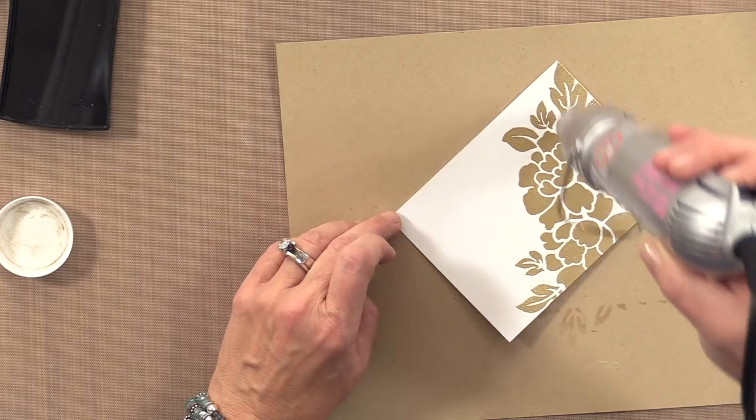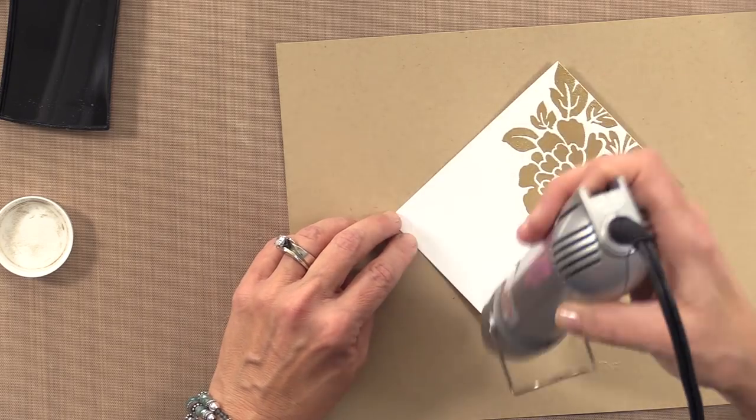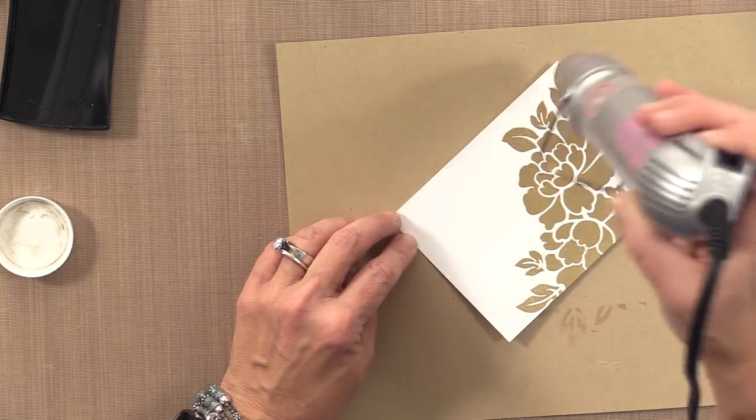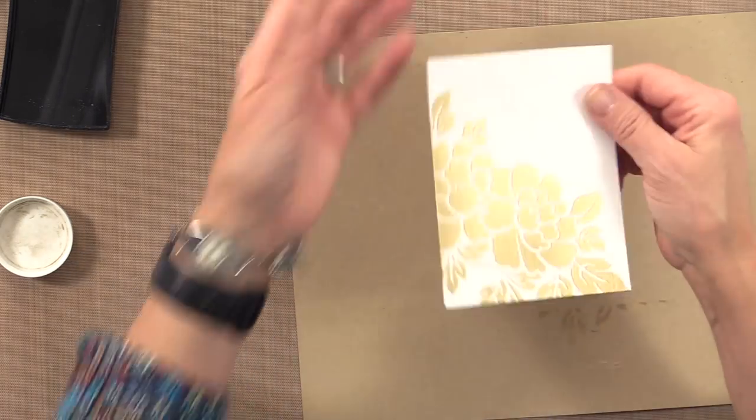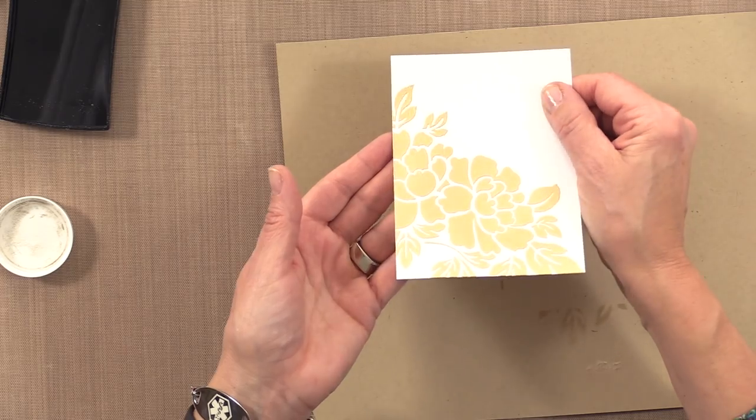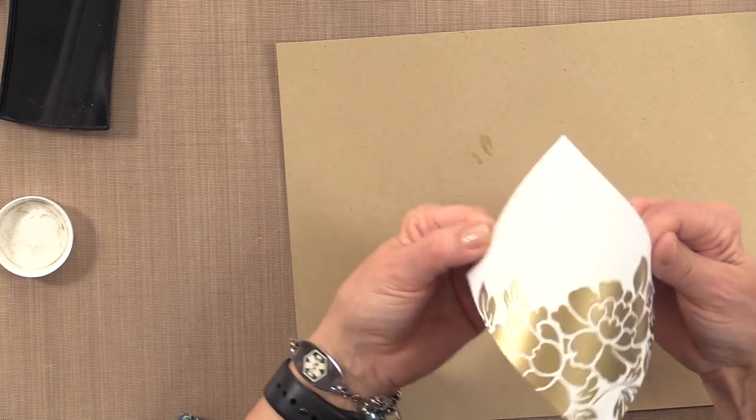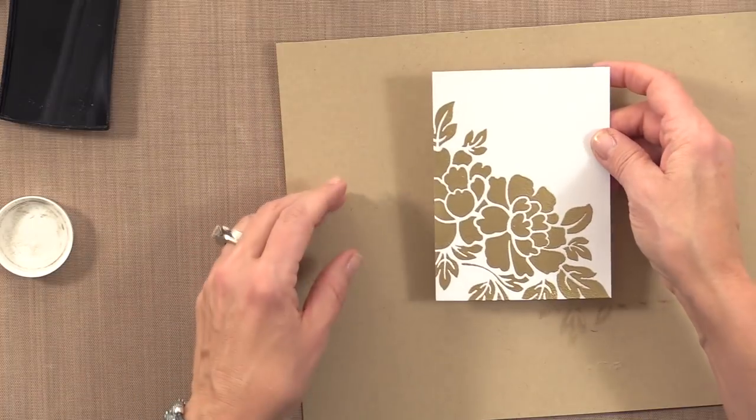You can also mix embossing powder colors if you want. You can do half in gold and half in silver. All right, so now you can see that that is all heat embossed. Isn't that pretty? It's another really fun way to use those stencils.